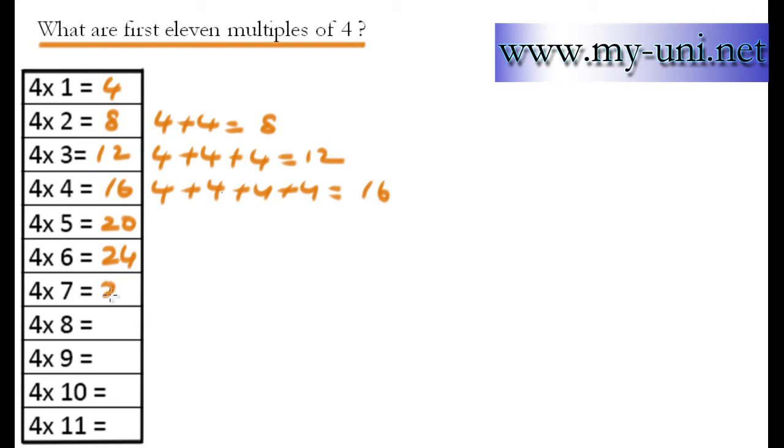4 times 7 would be 28. 4 times 8 would be 32. 4 times 9 would be 36. 4 times 10 would be 40. And 4 times 11 would be 44, as simple as that.